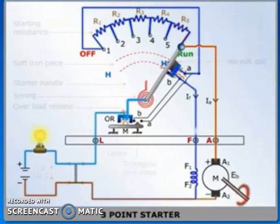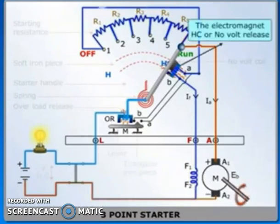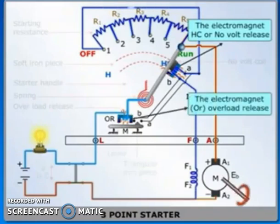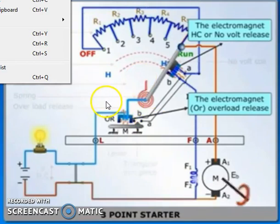No-volt release or low-voltage release acts as a protective device to protect the motor during power failure. To protect the motor during power failure and overload conditions, two protective devices are provided as indicated in the above figure.